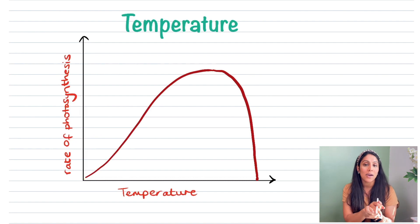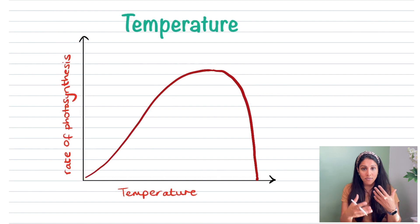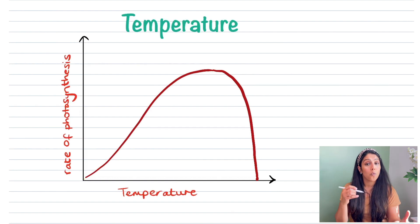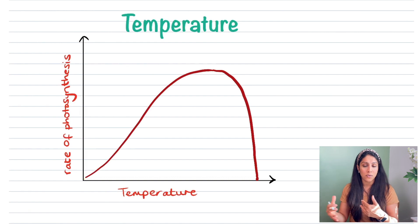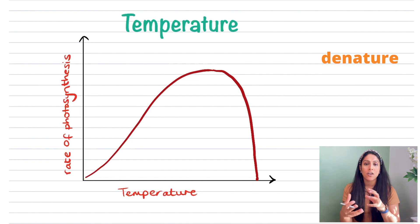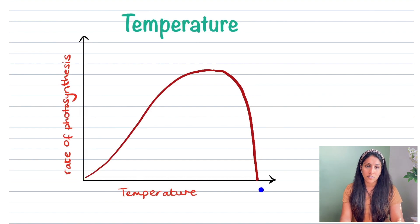The decline is caused by enzymes. Enzymes speed up reactions, and every reaction in plants usually requires enzymes. When they hit a temperature that is too hot, they start to denature — they change their shape and can no longer allow the reaction to take place. You can see that the enzymes have denatured, causing the rate of photosynthesis to decline and no longer occur.